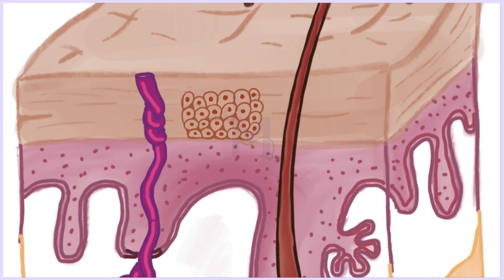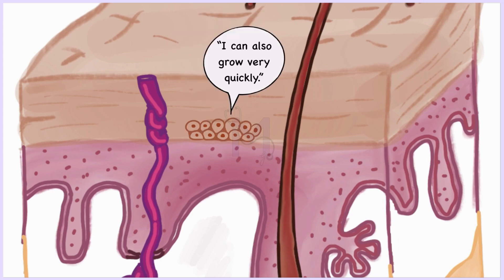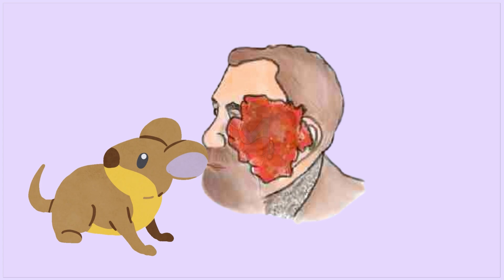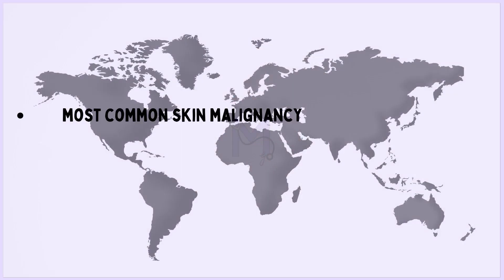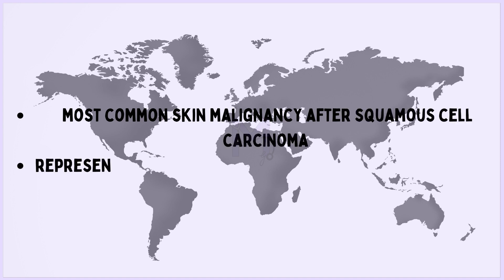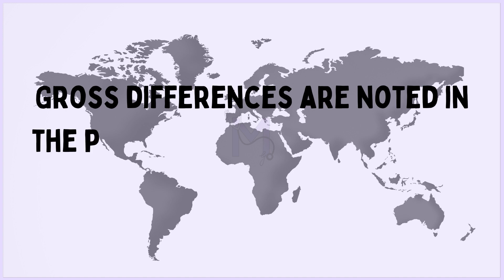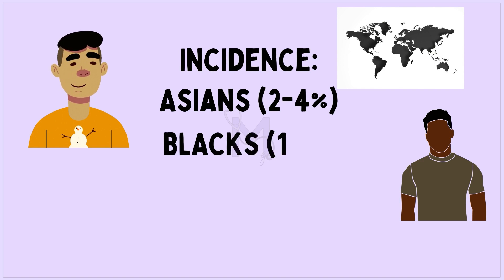Basal cell carcinoma is a type of non-melanotic skin cancer originating from basal cells, which produce new cells as old ones die. Although it does not have metastatic potential, it remains dangerous because of its subtle and relentless growth, causing local infiltration and destruction — hence it is also called rodent ulcer. It represents 70 to 80 percent of skin cancers, mainly affecting light-skinned individuals, compared to Asians (2–4%) and blacks (1–2%) versus Caucasians (35–40%).